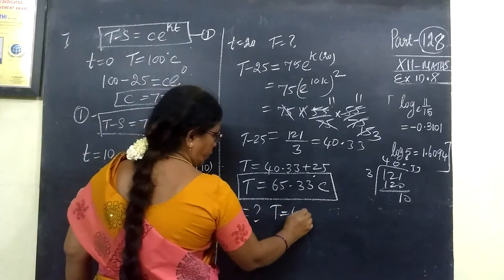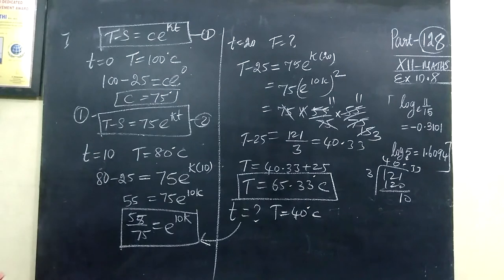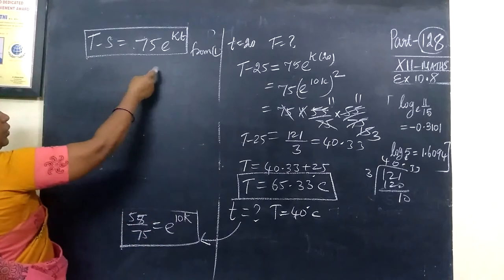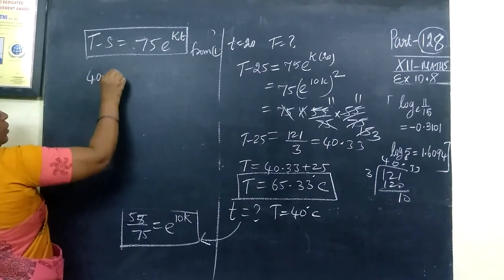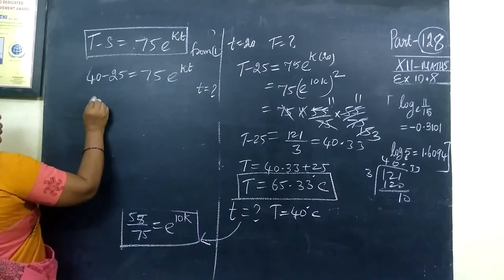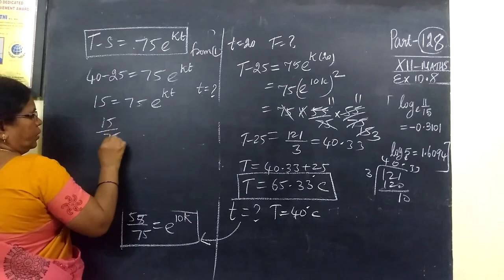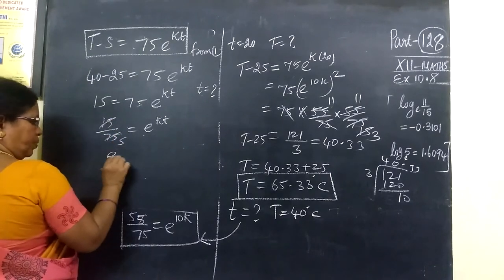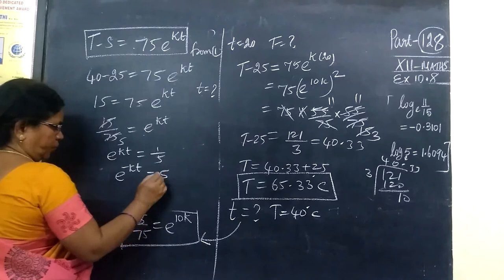For part two, when T equals 40 degrees Celsius, we need to find the time. We use the same step: T minus S equals 75·e^(kt). Substituting T equals 40 and S equals 25: 40 minus 25 equals 75·e^(kt), so 15 equals 75·e^(kt). Dividing, 15 by 75 equals e^(kt), which gives e^(kt) equals 1 by 5.